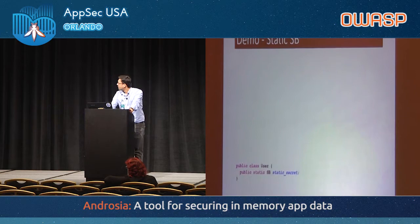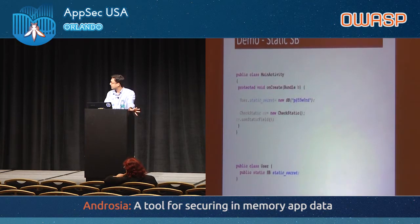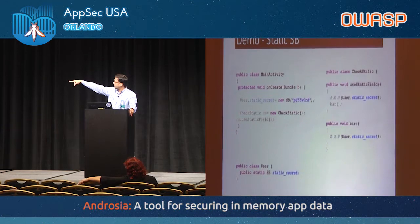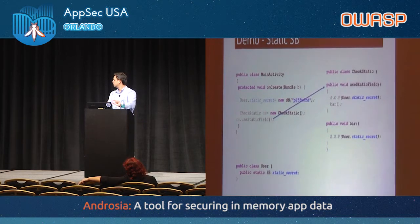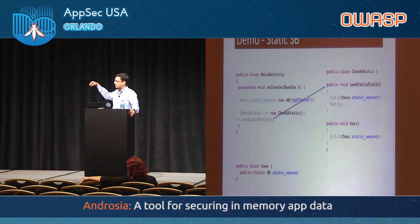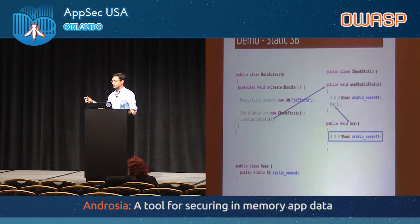In the demo, there's a User class with a static StringBuilder field called 'static_secret'. The MainActivity's onCreate method instantiates the StringBuilder with the value 'password', calls useStaticField from CheckStatic class, which uses static_secret. Then bar is called, which uses static_secret again. The tool determines the last use is inside bar — right there — so it instruments code right after that statement to clear the content of static_secret.